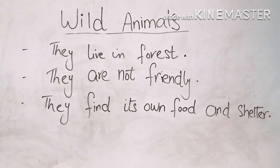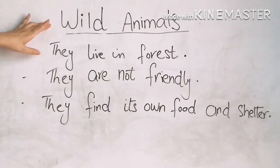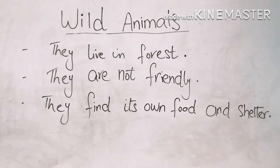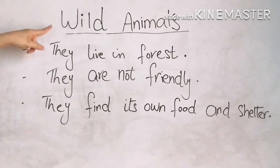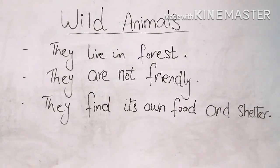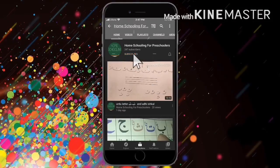Aap sabko pata laga wild animal kaunse hoti hai? Wild animals live in forest. And you know, they are not friendly. They are not pet animals, ok? Ham unko ghar mein bhi nai rakh sakte hai, kyunke woh dangerous hoti hai, friendly bhi nai hoti. Toh ham unko ghar pe nahi rakh sakte hai. That's why they are not pets. And wild animals jo hote hai, they find their own food and shelter. Wild animals: lion, elephant, tiger, bear, and more.